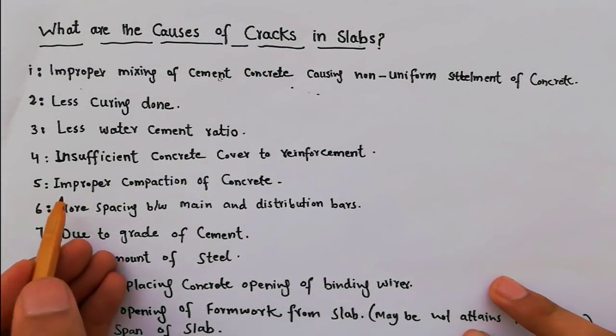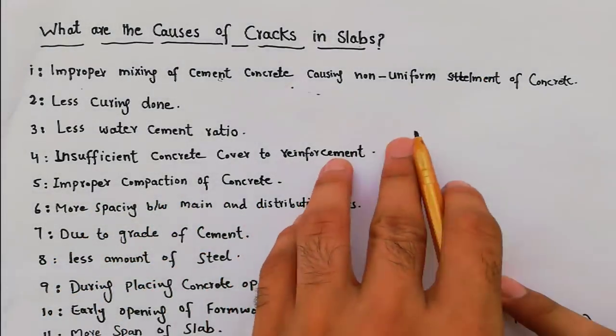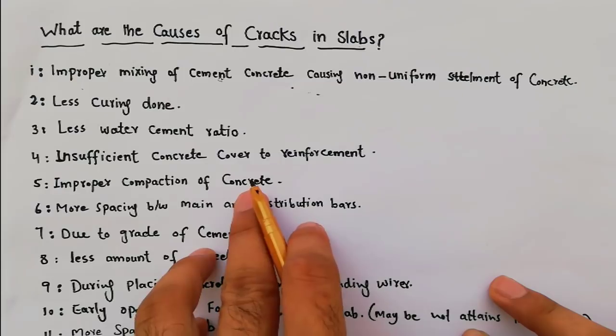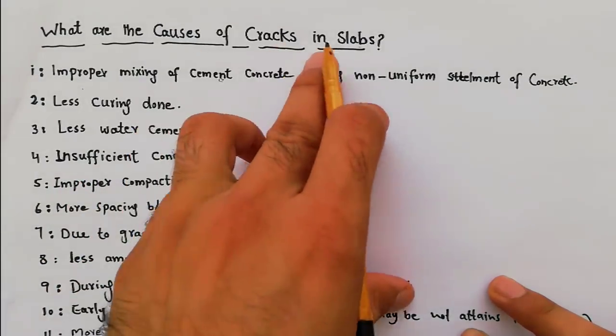Fifth one is improper compacting of concrete. We have to do proper compaction of concrete. So improper compaction of concrete is a cause of cracks in slabs.